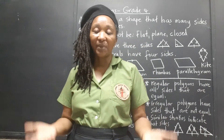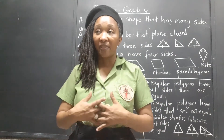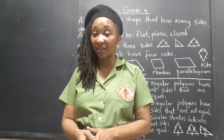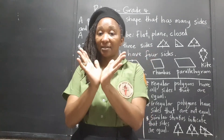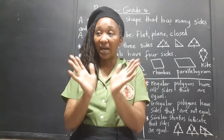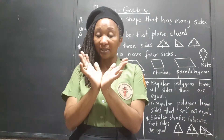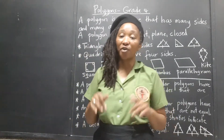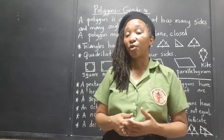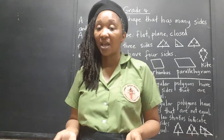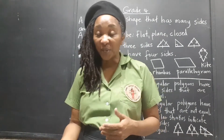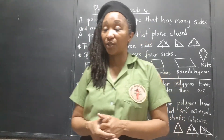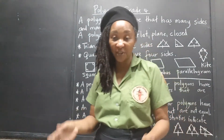If there must be many sides and they must be closed, then the first polygon must be a triangle. Two lines cannot be closed — if a shape only has two sides it's closed at one end but the other end is open. So the first polygon is a triangle. We're going to do a dedicated video just on triangles.